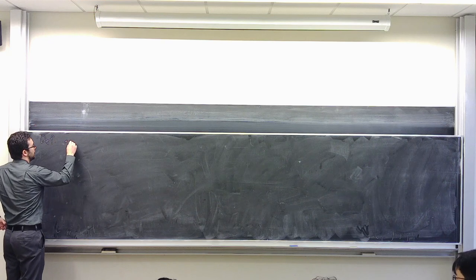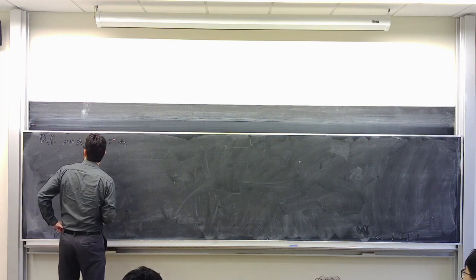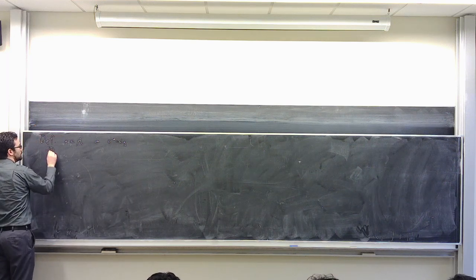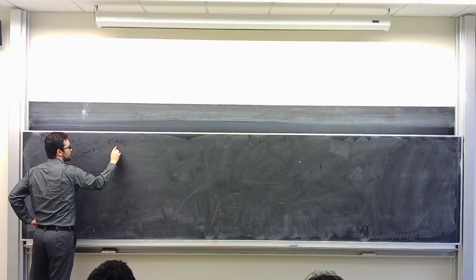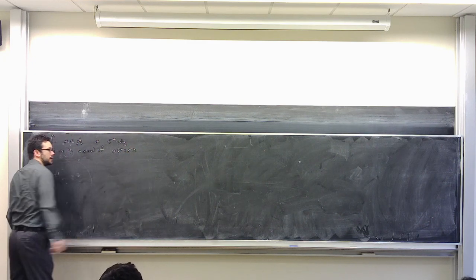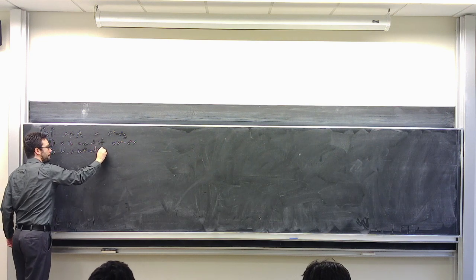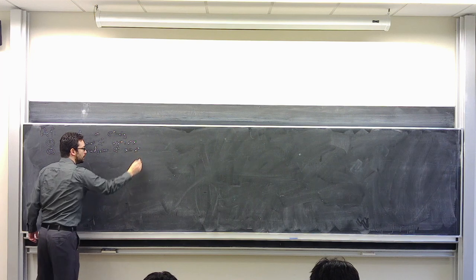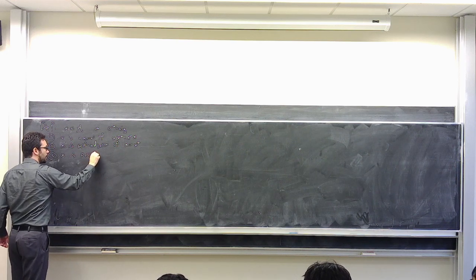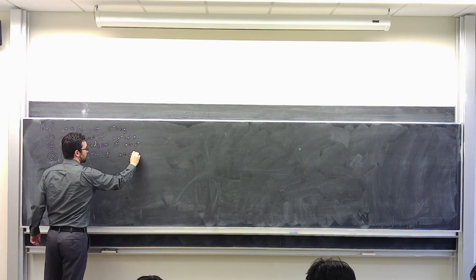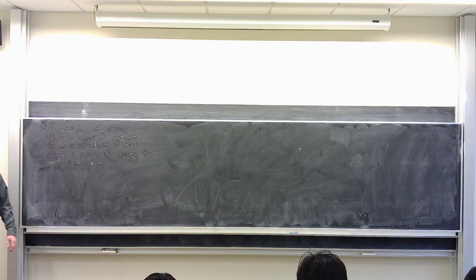So here we have X in a C*-algebra A. We'll say that X is normal if it commutes with its adjoint — we've already seen this. X is self-adjoint if it is equal to its adjoint, which in particular implies normal. X is positive if X can be written as Y*Y for some Y in A, so any element of the form Y*Y is positive.